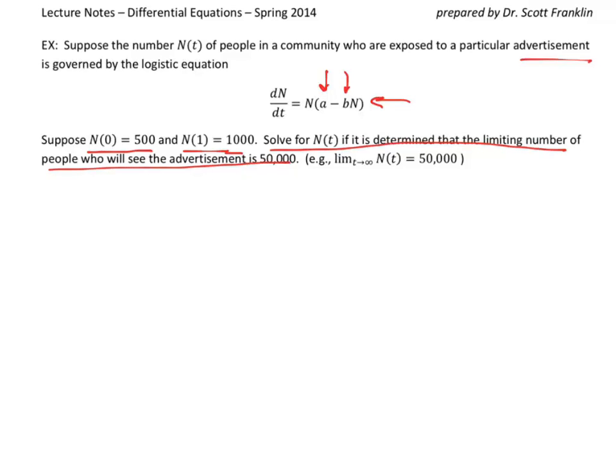First of all, we know after one day, which I didn't mention that, but that's the unit of time we're talking about here. After one day, we've reached 1,000. Now, we also know that the limiting number of people who will see your advertisement is 50,000. Now, remember that limiting is the carrying capacity. And so we know that the limit of t goes to infinity of n of t is 50,000. We derived already that this has to be a over b. So that's one of our conditions is that a over b has to equal 50,000. Now, we don't know what a and b are individually, but we do know that we can plug that in as one of our constraints.